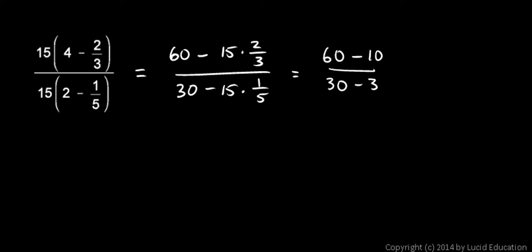And with a little bit of practice, you can skip this intermediate step. You can go from here and distribute and go straight to this step. If that's tricky for you though, go ahead and write this intermediate step to help you think it through. Now let's finish this up. 60 minus 10 is 50, and 30 minus 3 is 27. And that's our answer.